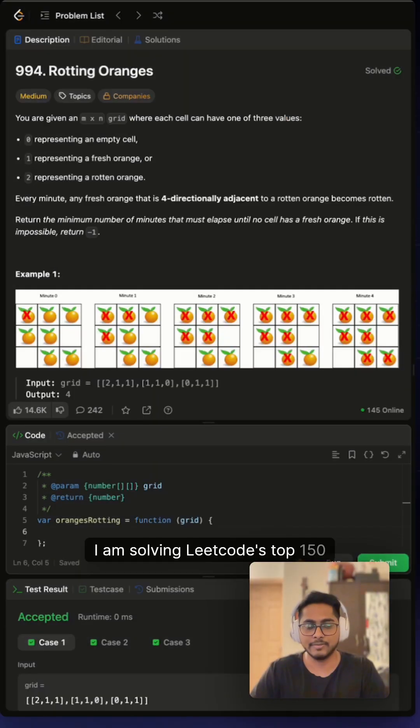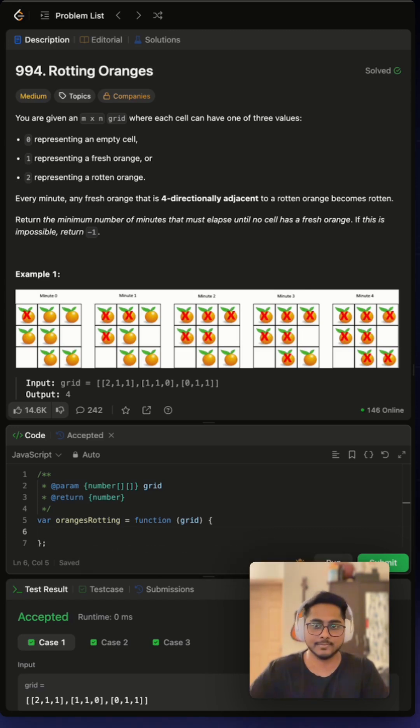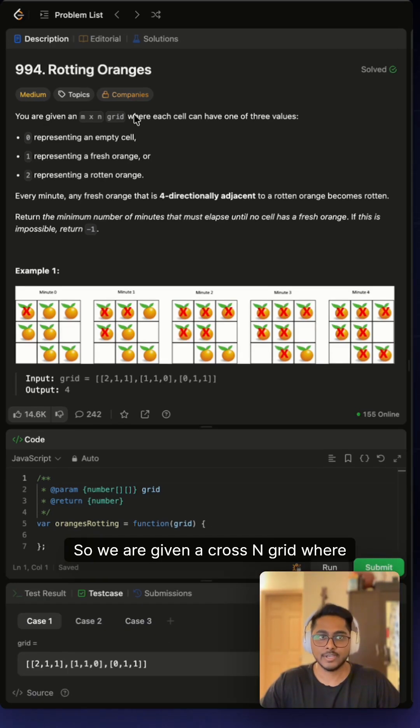Hi folks, I am solving LeetCode top 150 questions and that's all you need for your coding interviews. In this video we'll be solving 994 Rotting Oranges. We are given an m cross n grid where each cell